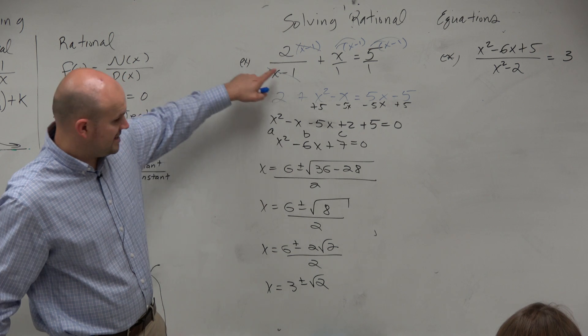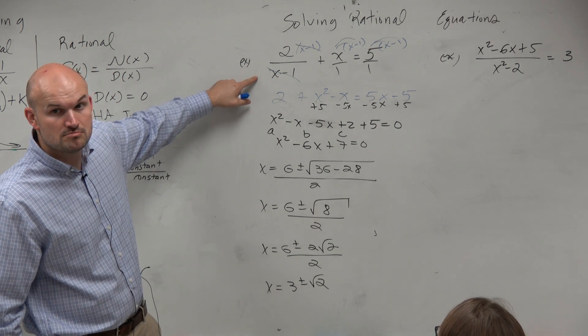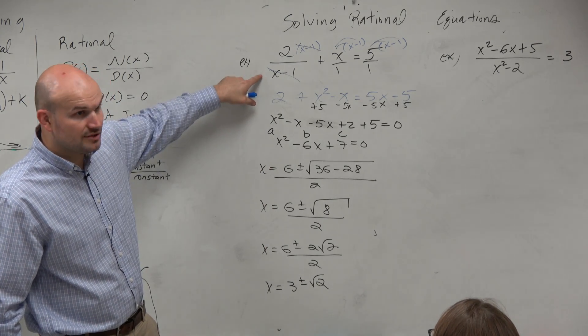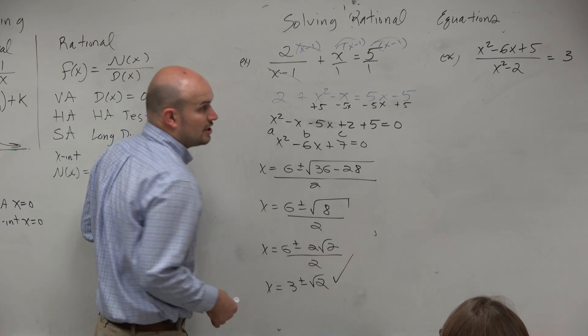And then we just want to go back and check our answers. Is either the positive or the negative going to be extraneous? No. Can we plug them in as going to make that 0? No. For it to be extraneous, x would have to equal 1. Right? So therefore, both these solutions are good.